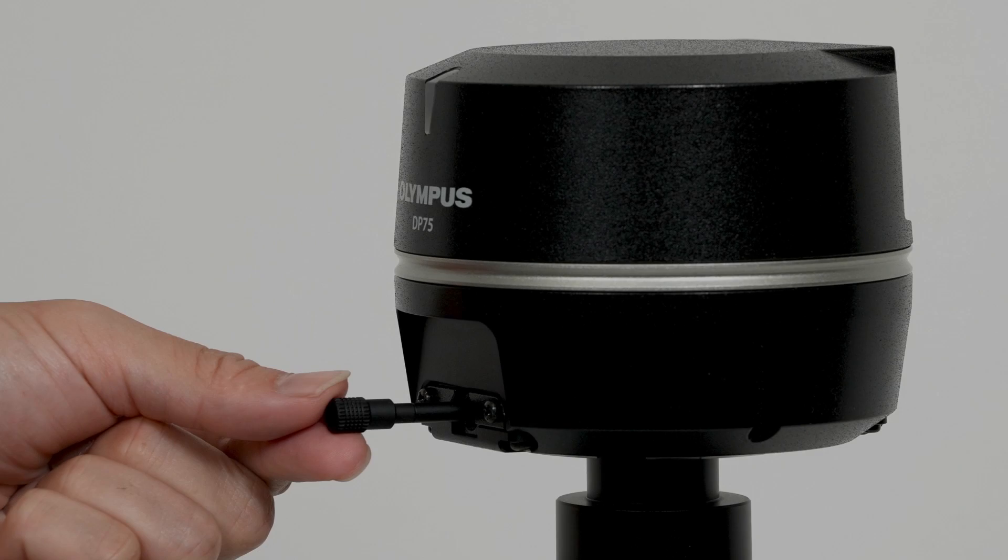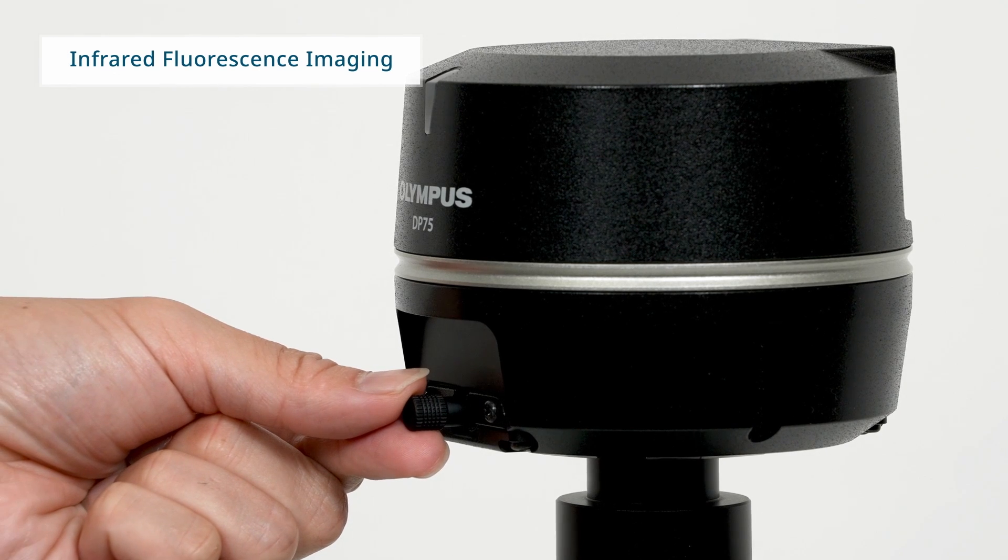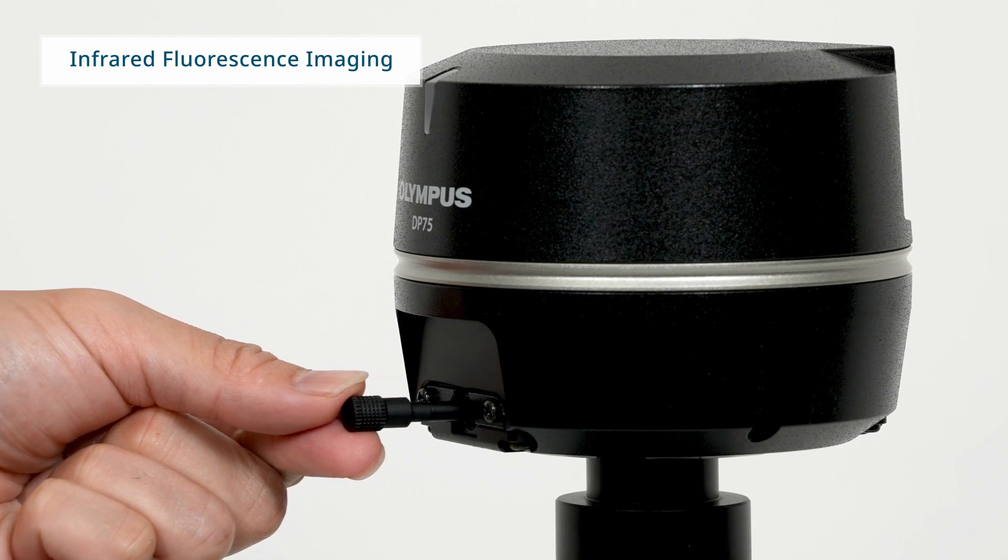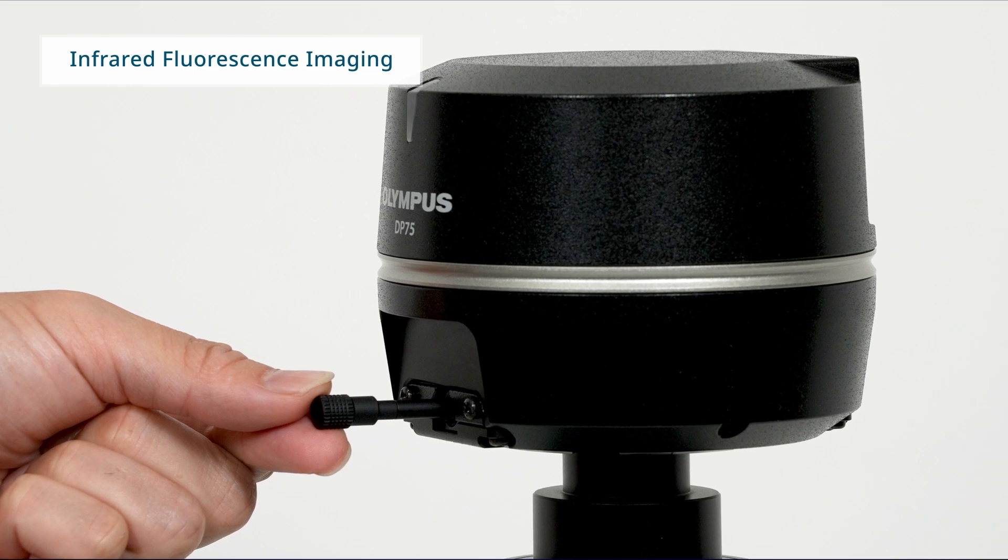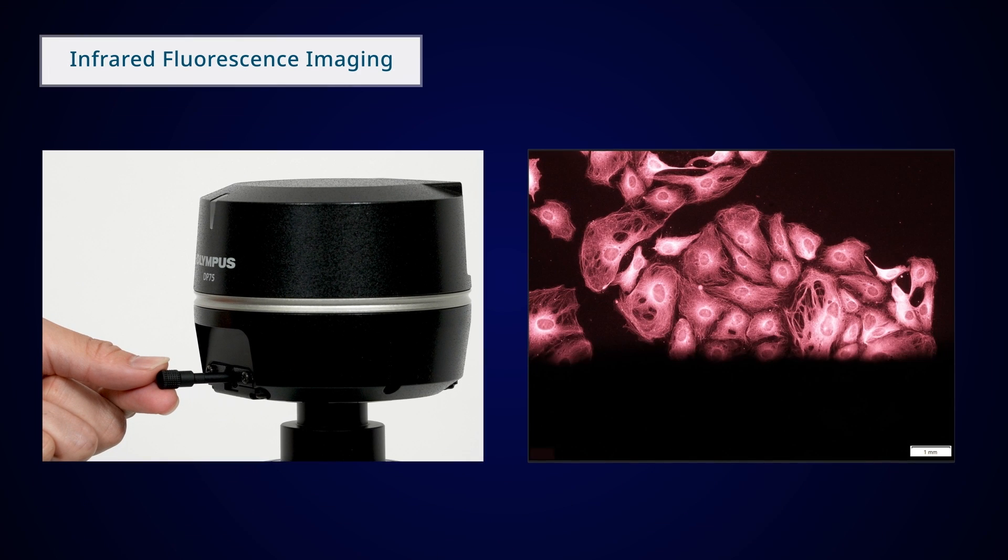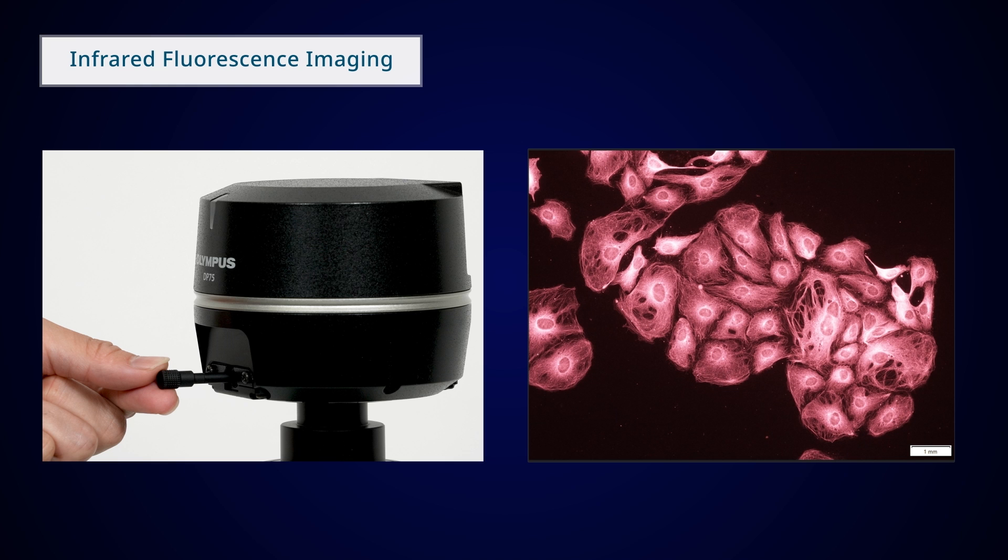Instead of dealing with the hassle of switching between a monochrome and color camera, the DP75 supports multiple imaging combinations and wavelengths up to 1,000 nanometers with a switchable infrared cut filter.